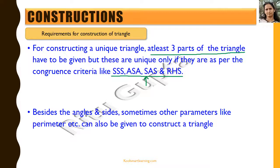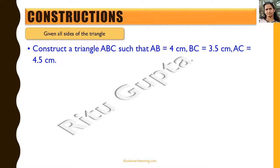If three parts are given, they must meet the congruency criteria. Besides the angles, sometimes other parameters like perimeter can also be given to construct a triangle. We will now see how to handle these cases to construct a unique triangle. First, we are given all sides of the triangle and need to construct it.